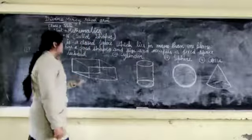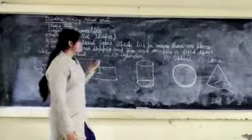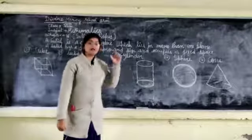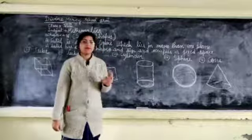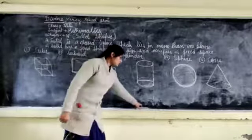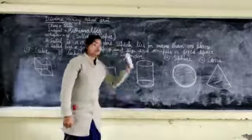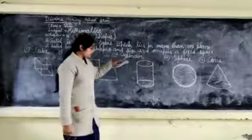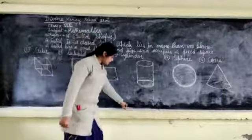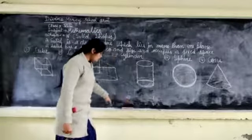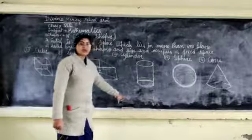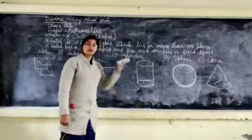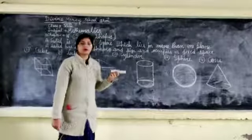A solid has a fixed shape and size and occupies a fixed space. Suppose this light void — it will occupy a fixed space. This is the definition of a solid figure.